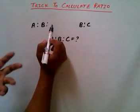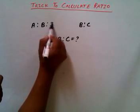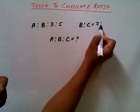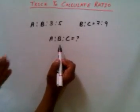Let's take any ratio. A ratio B is 3 ratio 5 and B ratio C is 7 ratio 9, and we have to calculate A ratio B ratio C.